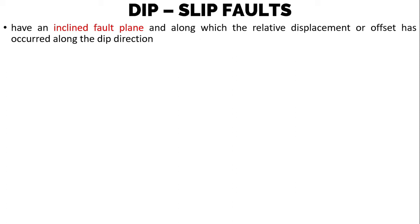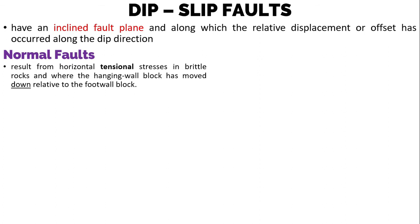Note that in looking at the displacement on any fault, we don't know which side actually moved, or if both sides moved. All we can determine is the relative sense of motion. There are two different types of dip-slip faults. First is the normal fault, which results from horizontal tensional stresses in brittle rocks.